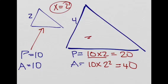So basically, this ratio is just the same for the perimeter, but is squared for the area.